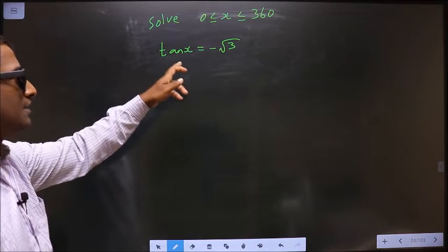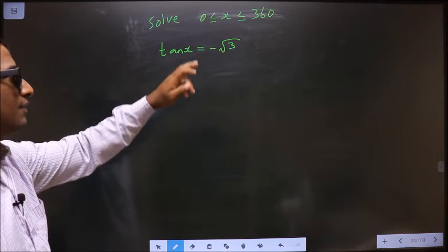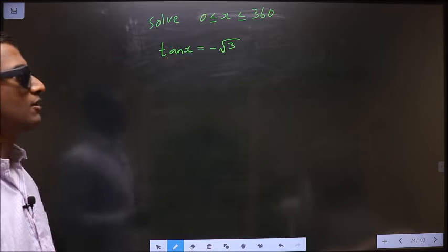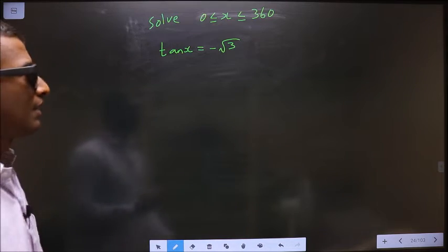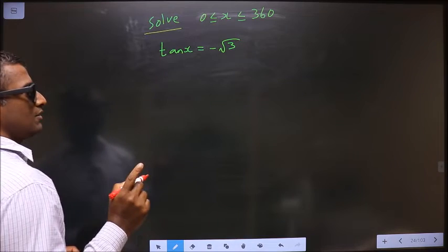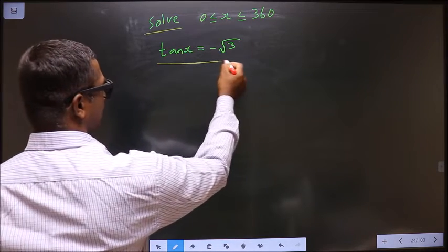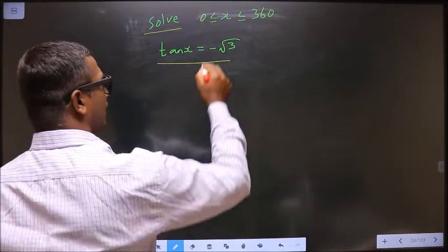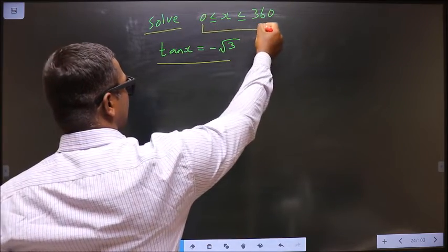Solve tan x equals minus root 3 where x lies between 0 to 360 degrees. They told you to solve, so you need to find the values for x satisfying this equation and also lying in this interval.